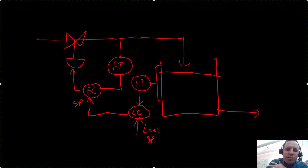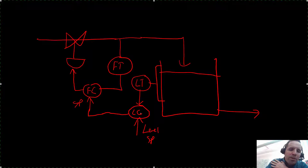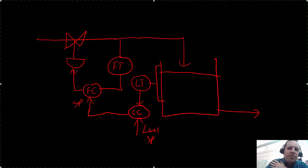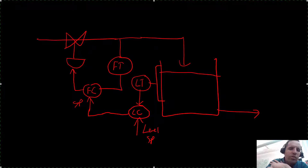This is called cascade control. When we have a master controller — in this case the level controller — that calculates as its manipulated variable the setpoint of another controller, that other controller is known as the slave controller. So the level controller is trying to achieve a certain level and tells the slave flow controller what to do.